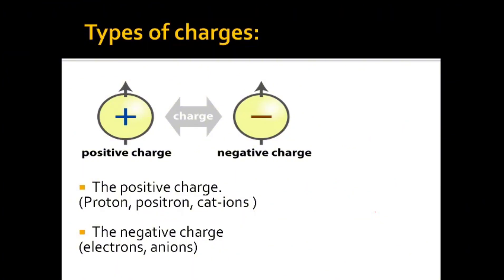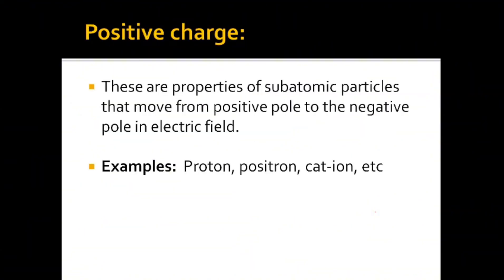Cations are bodies that lose electrons, and because they lose electrons, they have more positive charges than negative charges. Examples of negative charges are electrons and anions. Anions are bodies that gained electrons, and because they gained electrons, they have more negative charges — so we say they are negatively charged.